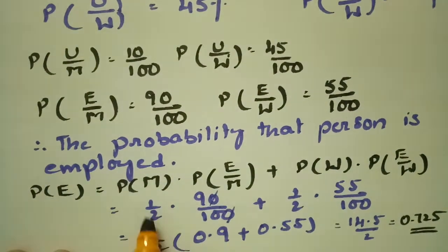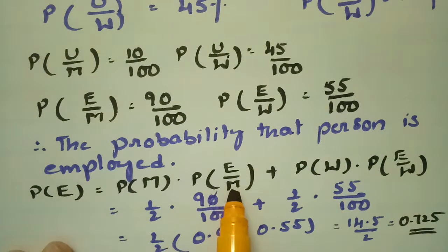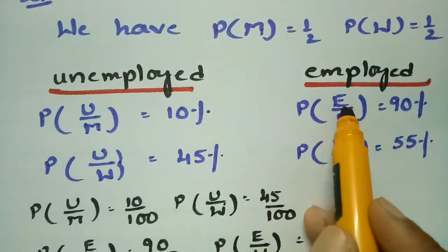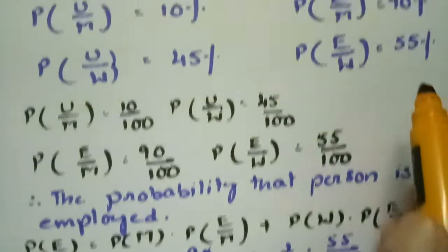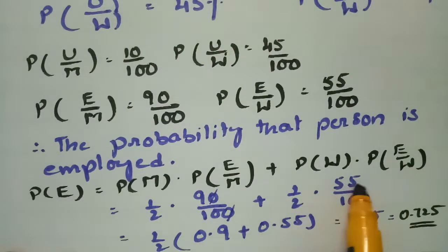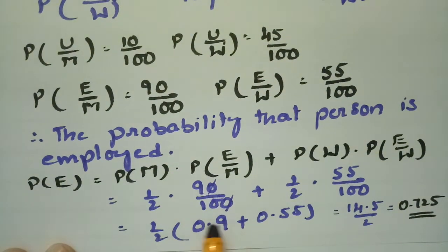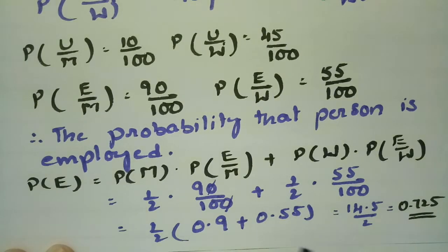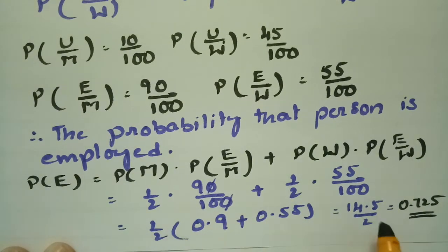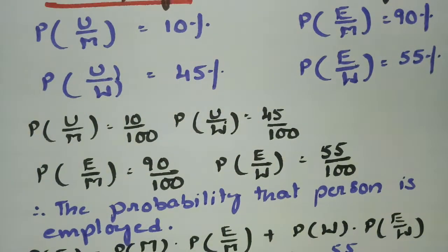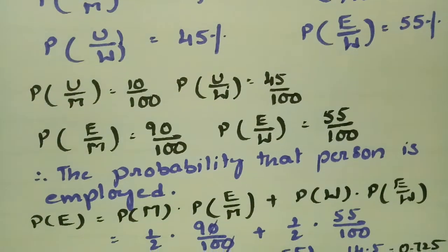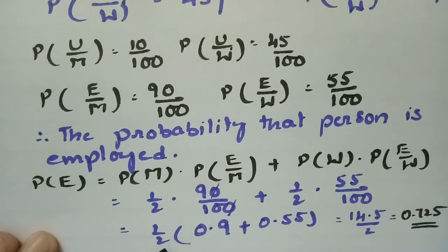Total men is half and total women is half. Employed men is 90%, that is 90/100, and employed women is 55%, that is 55/100. So this is (0.9 + 0.55) divided by 2, which equals 1.45 by 2, equal to 0.725.